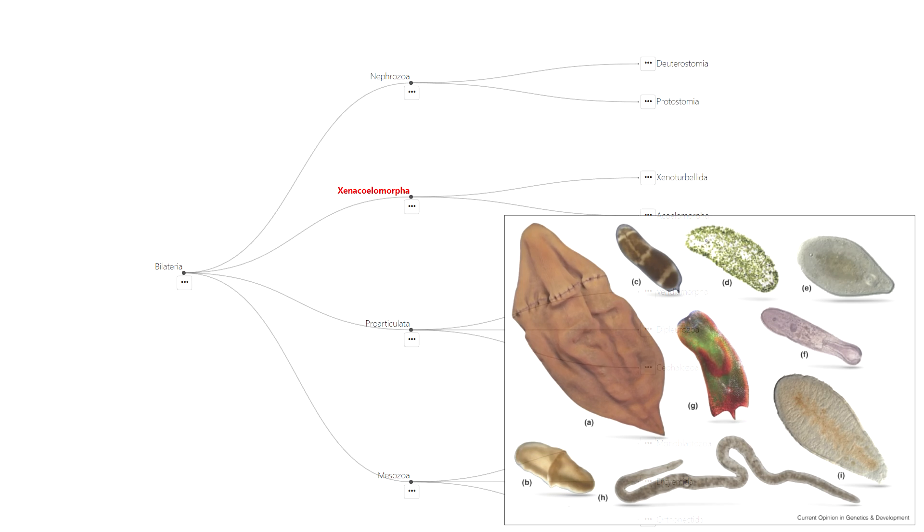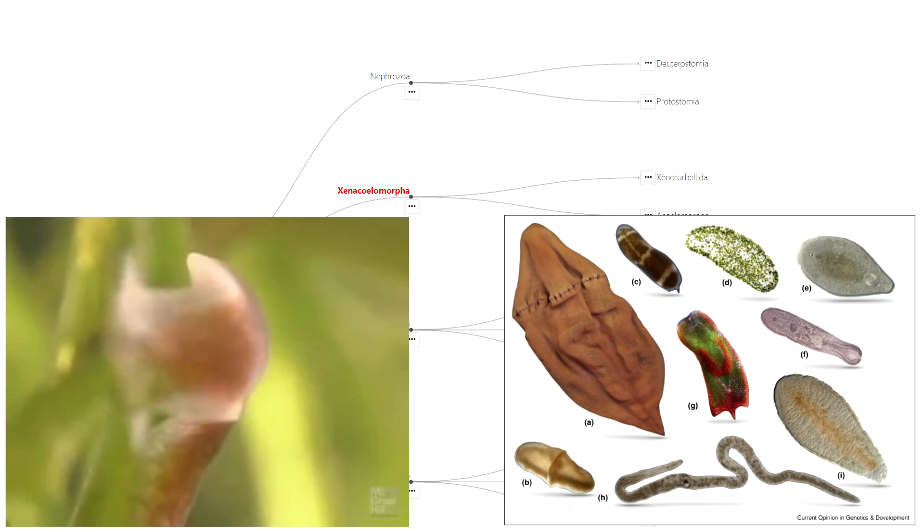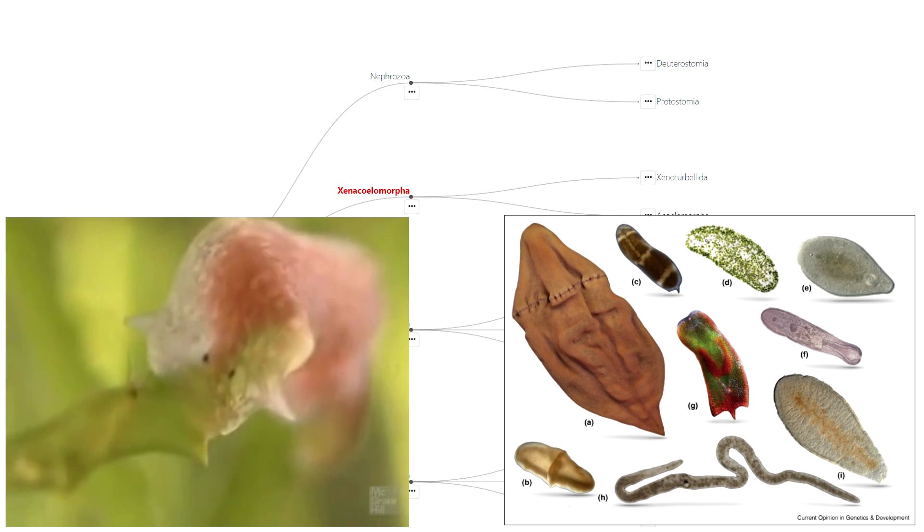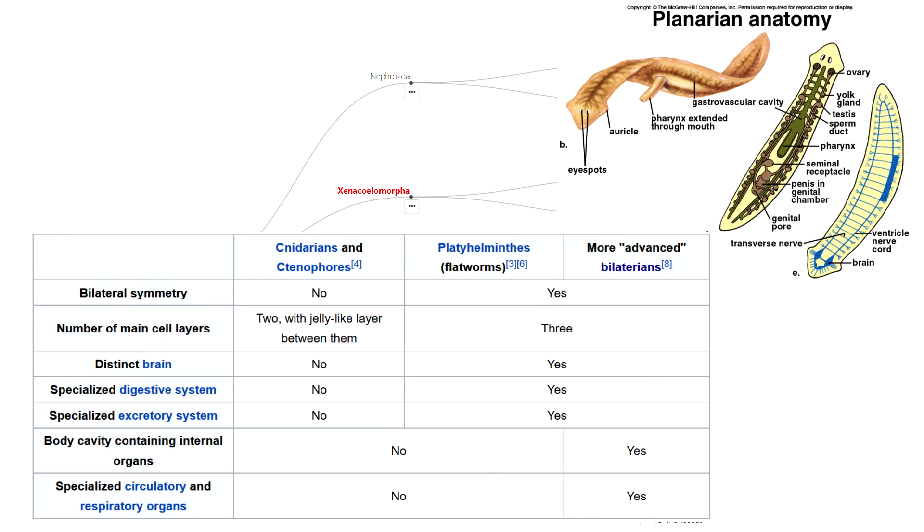Xenacoelomorpha is the most basal clade of bilatarians, meaning they're karyotypic of our earliest ancestors within that clade. They're typically represented by flatworms, which is a favorite of college biology classes because they're seemingly ancestral to all more advanced animals yet they're still around. They're triploblastic, meaning they develop three germ layers just as we do, and they not only have a central nervous system but a neural network composing the most basic sort of an actual brain.